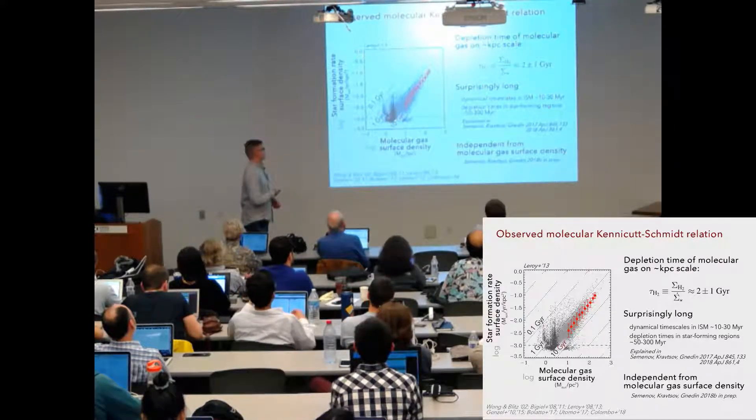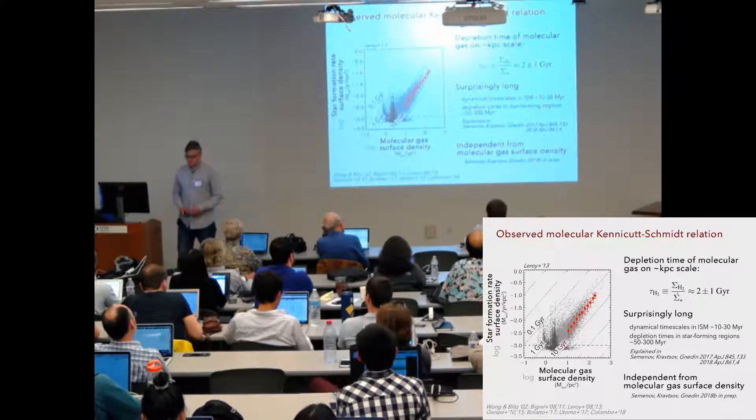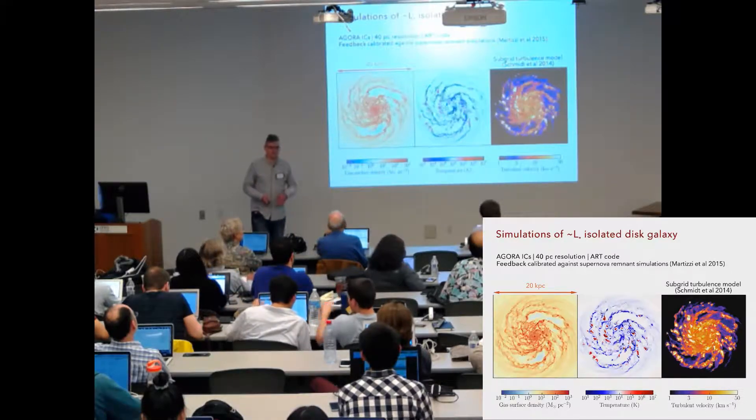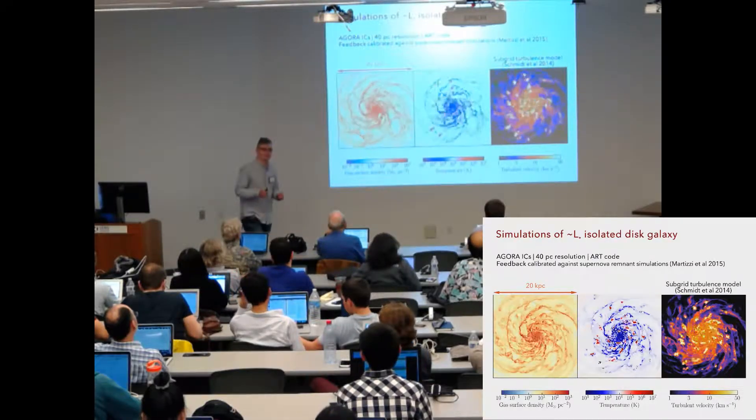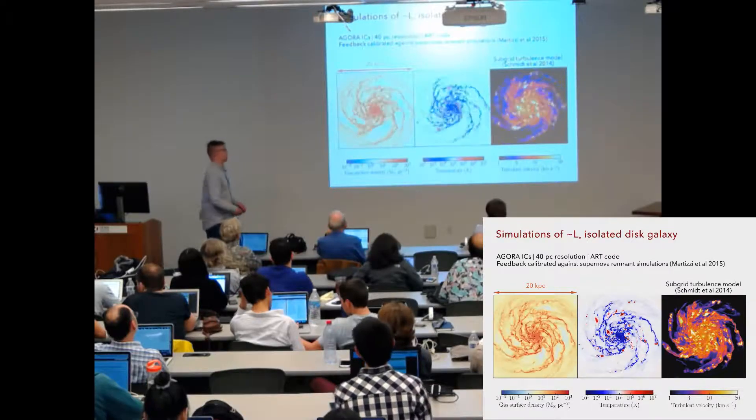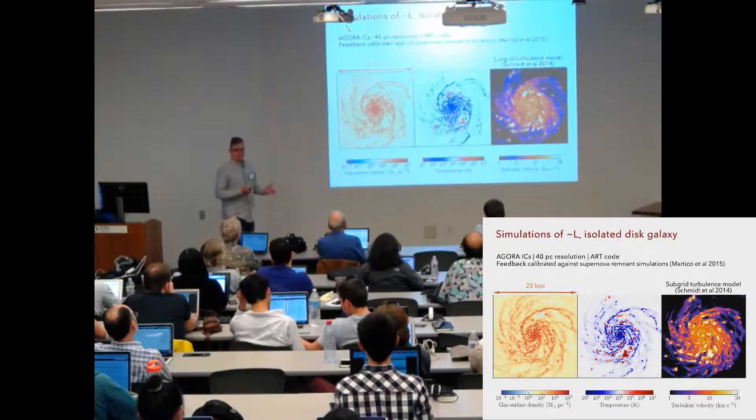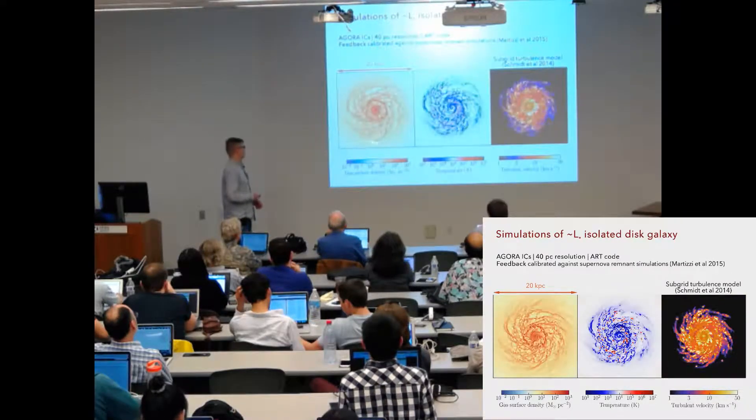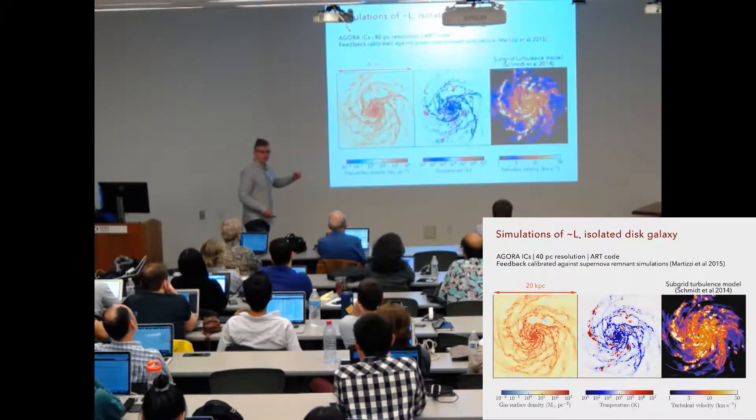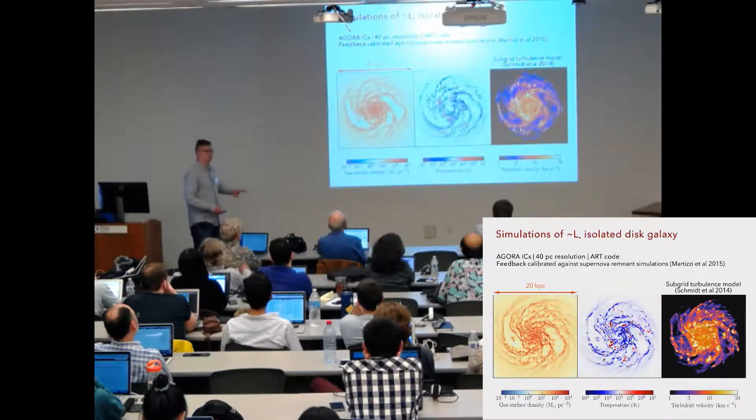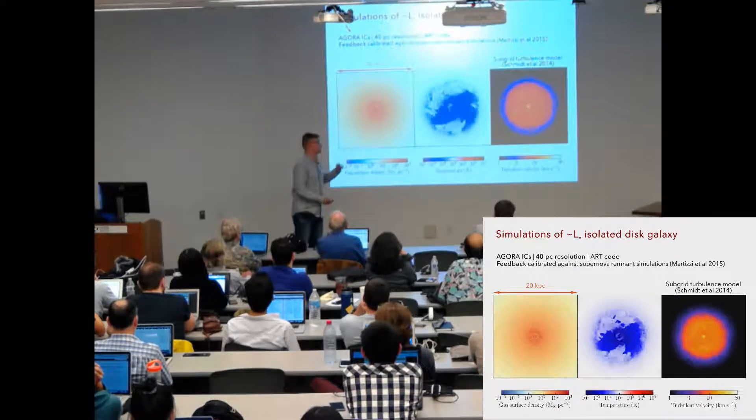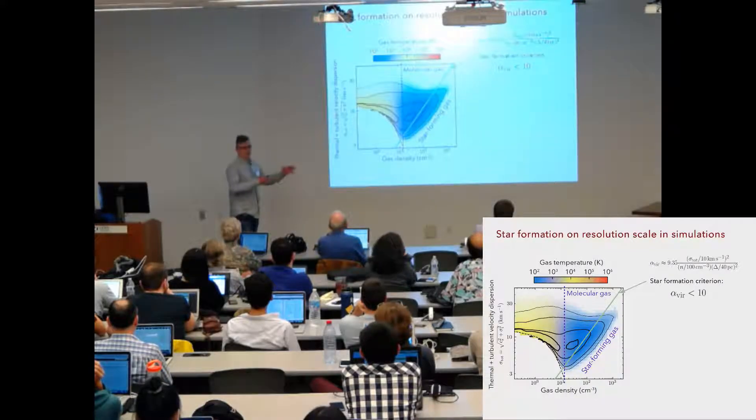The linear slope means that the depletion time of molecular gas is almost independent of the surface density of molecular gas. And to explore this question, why this is the case, we ran a suite of idealized simulations of isolated L-star galaxy with widely varied parameters of star formation and feedback to check how these local assumptions about star formation and feedback affect what we get on kiloparsec scales in terms of the slope of the molecular Kennicutt-Schmidt relation. What is special about this set is that in addition to gas density and temperature and other quantities which you will find in any simulations, we also model explicitly subgrade turbulence in each cell dynamically as an additional energy field. The idea is that because we have information about turbulent velocity on unresolved scales, we can calculate the virial parameter and use it to model star formation locally.